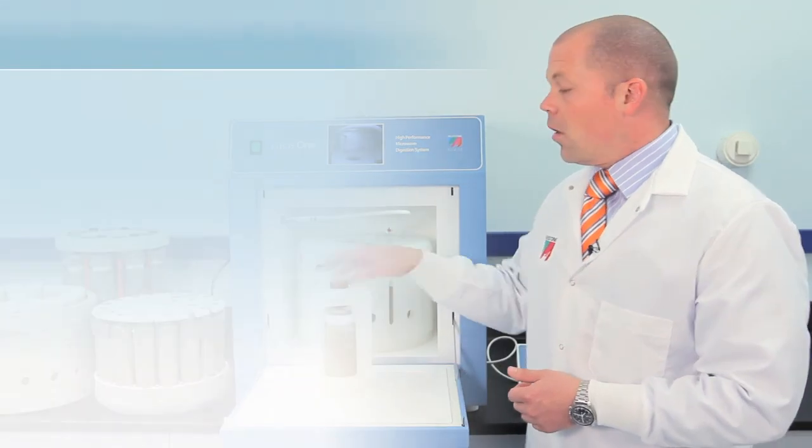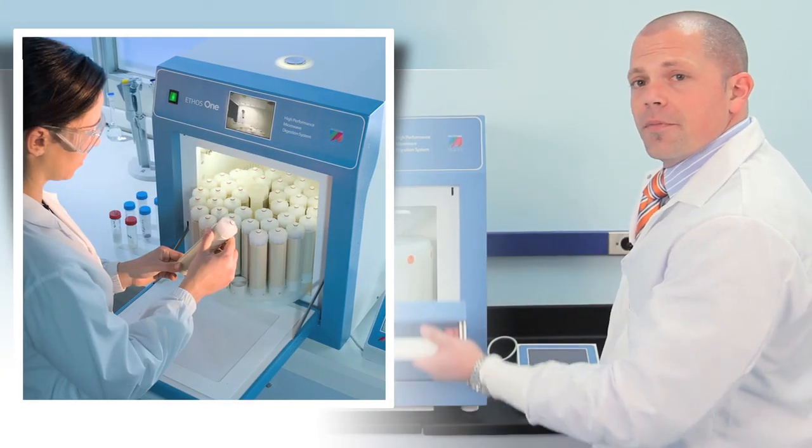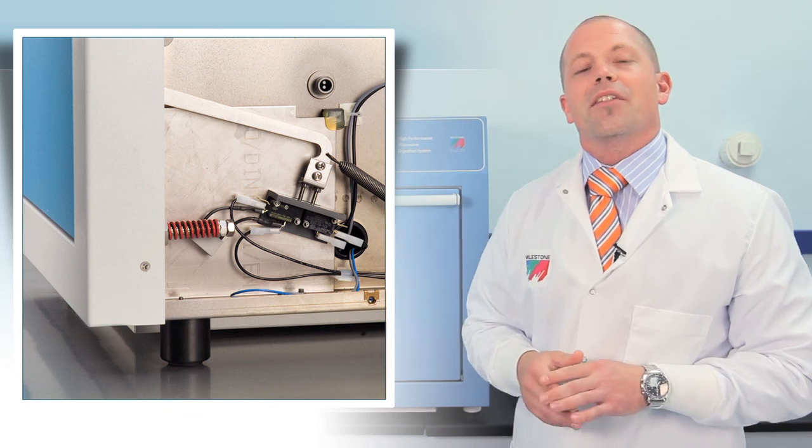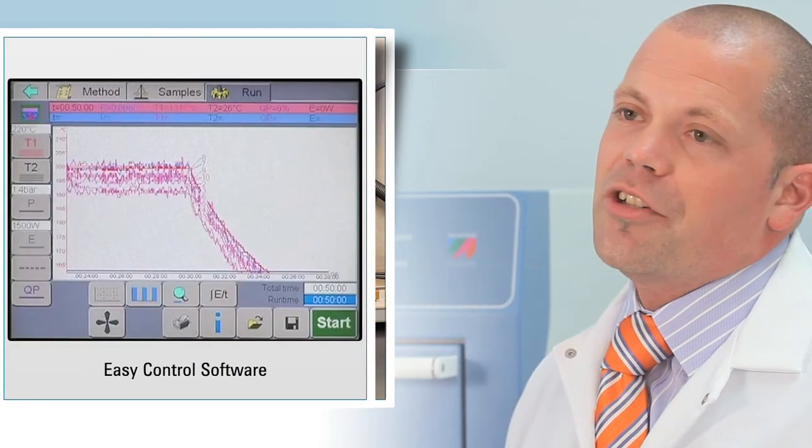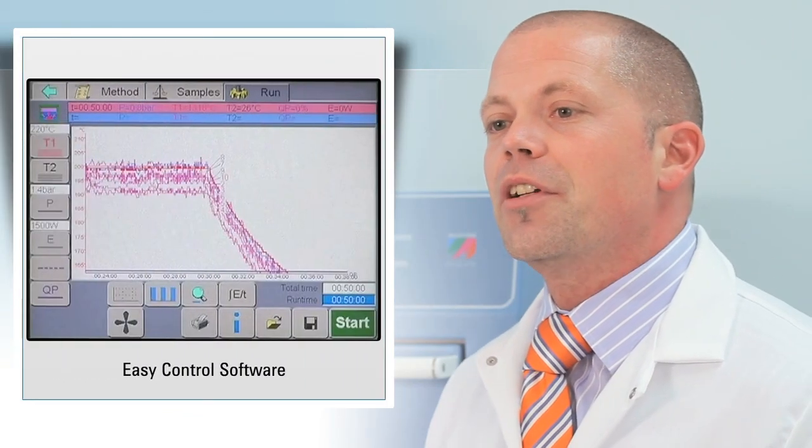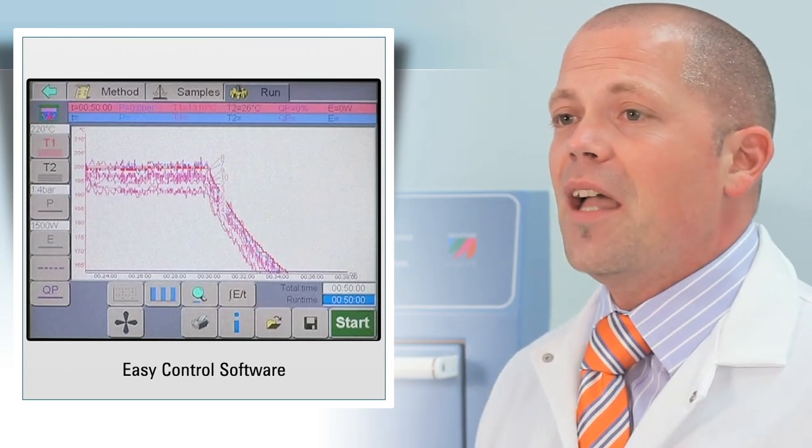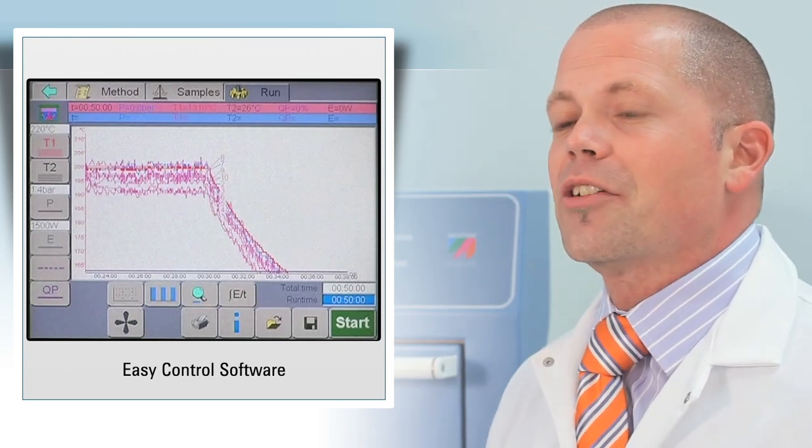And that's the Ethos 1. All stainless steel construction, a pressure release safety door, and 5-year warranty against cavity corrosion. Operation is extremely easy with the touch screen controller running easy control software. Its advanced PID control allows maximum reaction control.